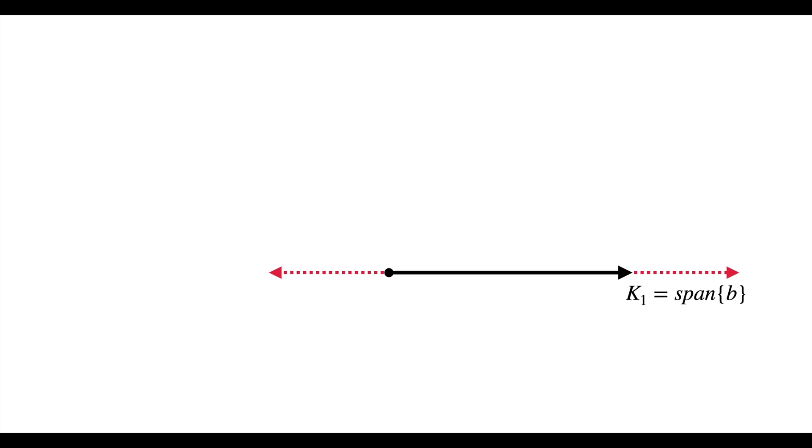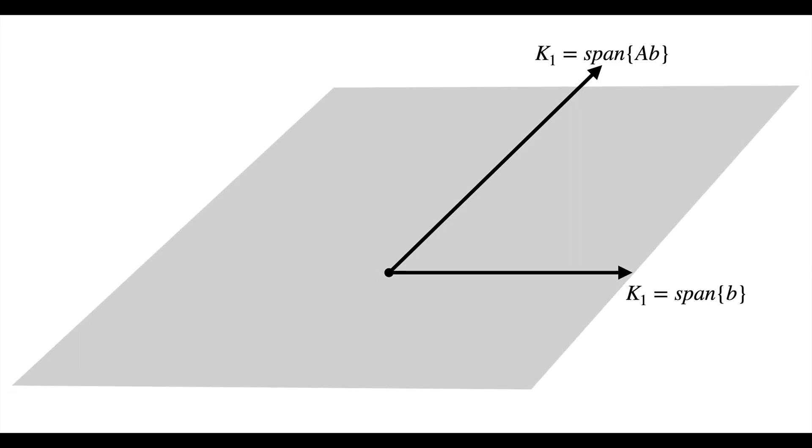Otherwise, we go to the next dimension that is as shown by this gray plane K₂, the span of b and Ab, a two dimensional subspace in n dimensions. Again, if we're satisfied with the solution here, we stop.